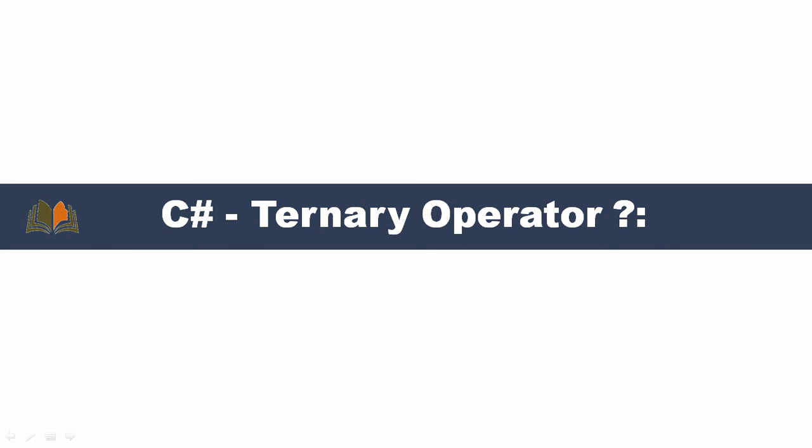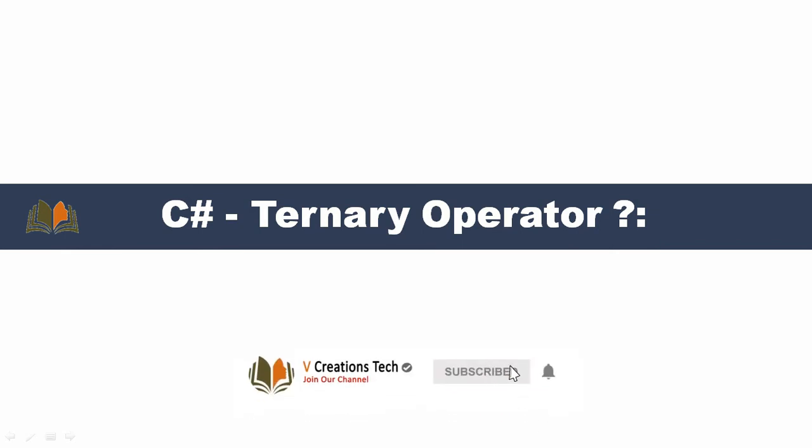In C#, the conditional operator — the question mark and colon — is called the ternary operator. This ternary operator is the replacement of if-else conditions. In place of writing if-else conditions, we can implement the same logic with a ternary operator.